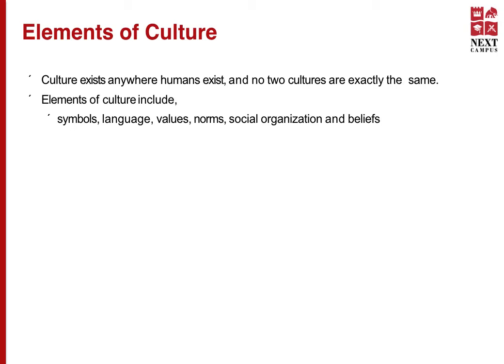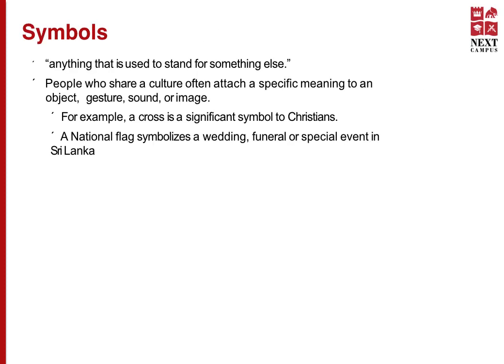As mentioned before, culture is intangible, but there are elements of culture which make us understand it and identify it. These elements include symbols, language, values, norms, social organization and beliefs. Symbols are a very visible form of culture. They are basically anything that is used to stand for something else. People who share a culture often attach a specific meaning to an object, a gesture, a sound or even an image. For example, a cross is significant to Christians. A national flag symbolizes a wedding, a funeral or a special event in Sri Lanka. In an organization, this can mean the logo, the flag, or even a particular image or word that means something to the employees.